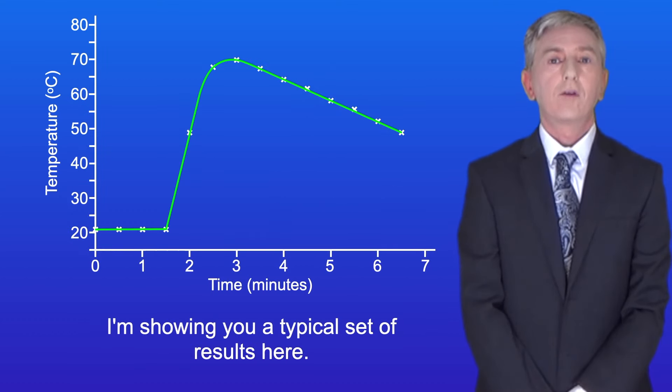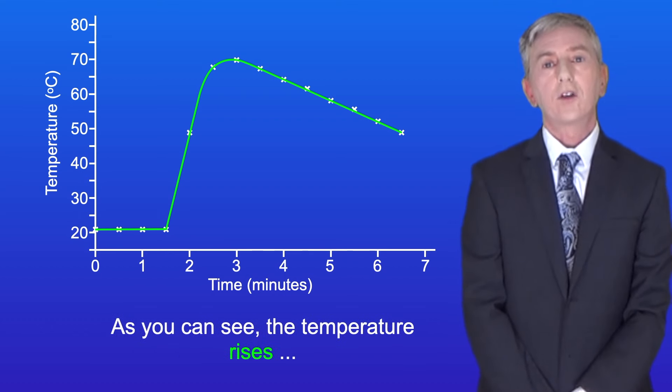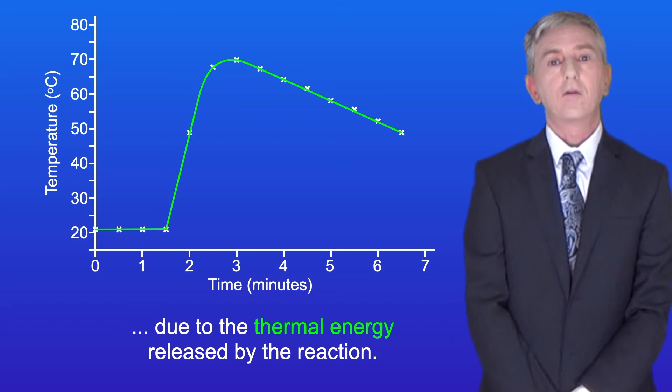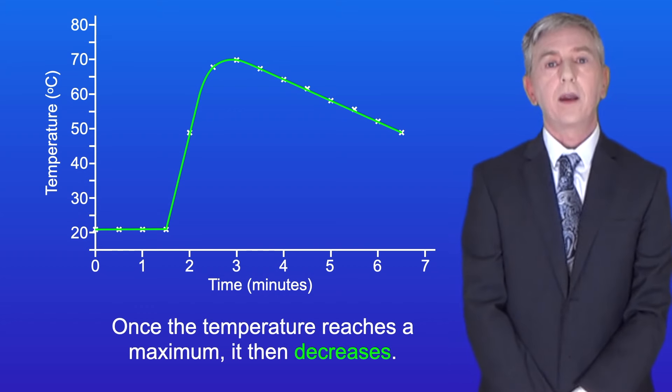I'm showing you a typical set of results here. The magnesium powder was added at 1 minute and 30 seconds. As you can see, the temperature rises due to the thermal energy released by the reaction. Once the temperature reaches a maximum, it then decreases.